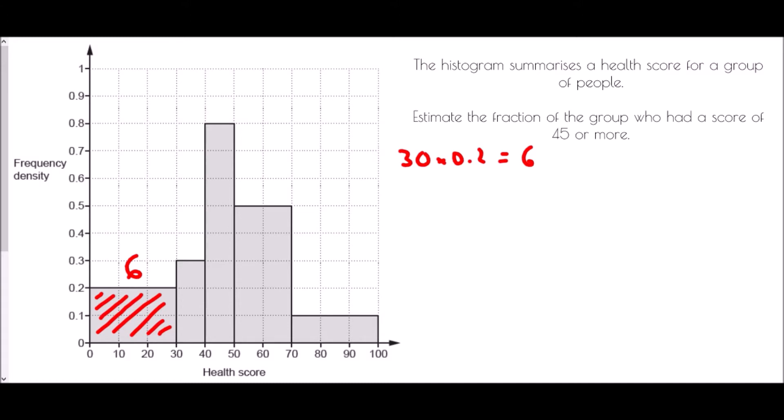The next is a width of 10 with a height of 0.3 and therefore we have 3 people in the next bar. The next group is a width of 10 but a height of 0.8 and so that is 8 people. The next group has a width of 20, a height of 0.5, and so 20 times 0.5 is 10.